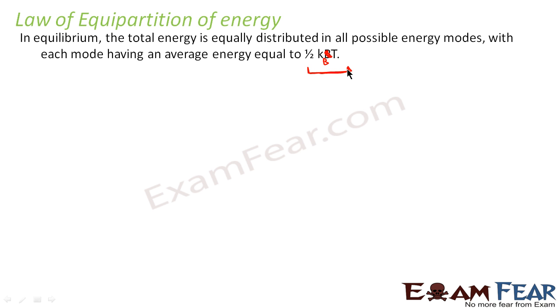So what does it say? It says that in equilibrium the total energy will be equally distributed to each degree of freedom. That's what is told here. It is equally distributed in all possible energy modes with each mode having an average energy equal to half kB T.